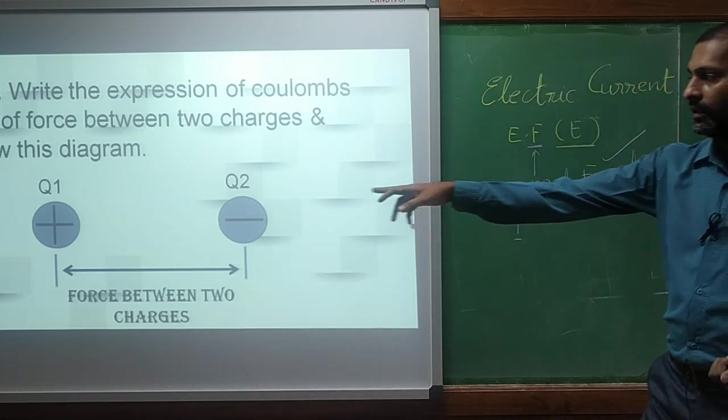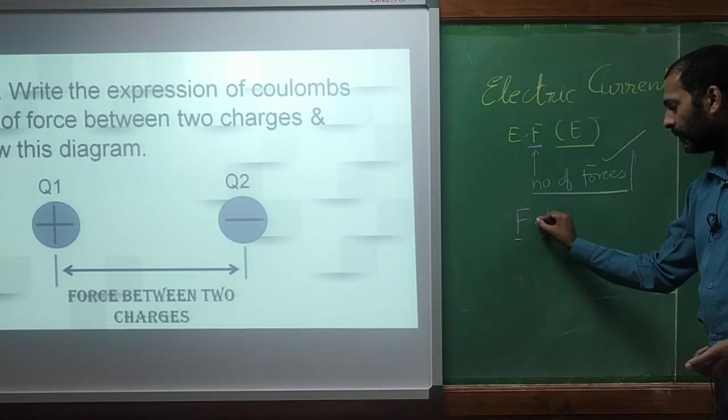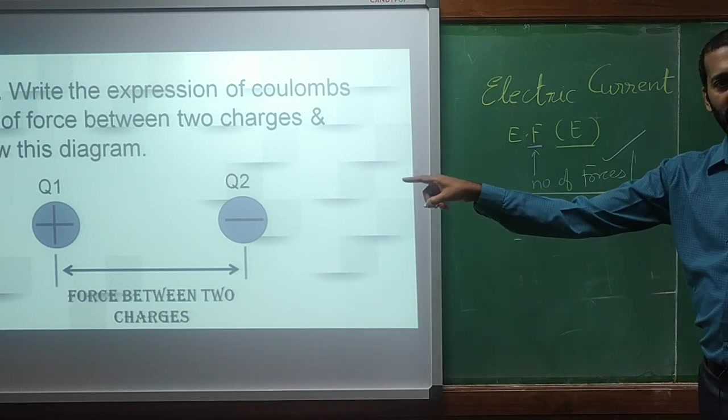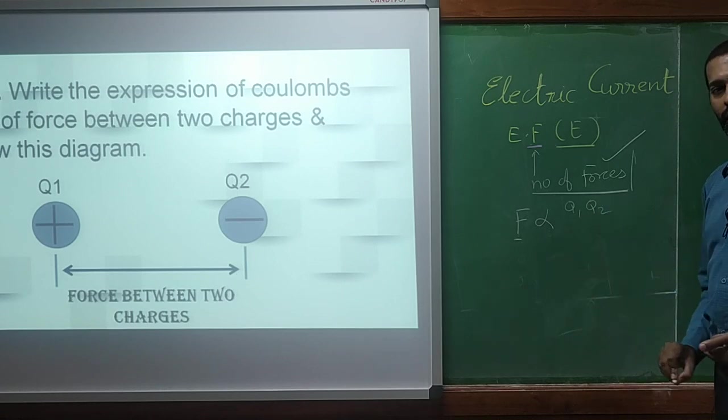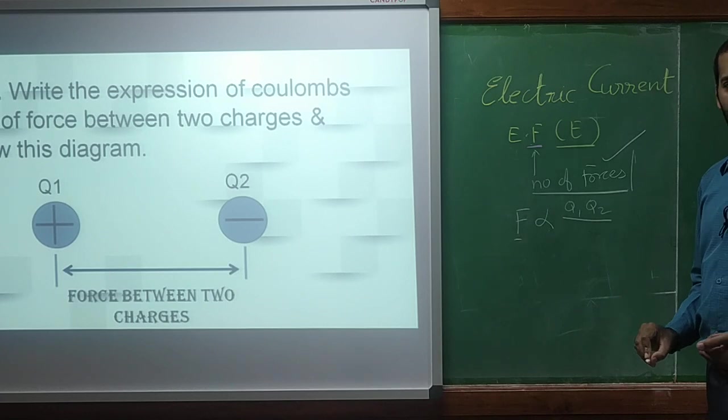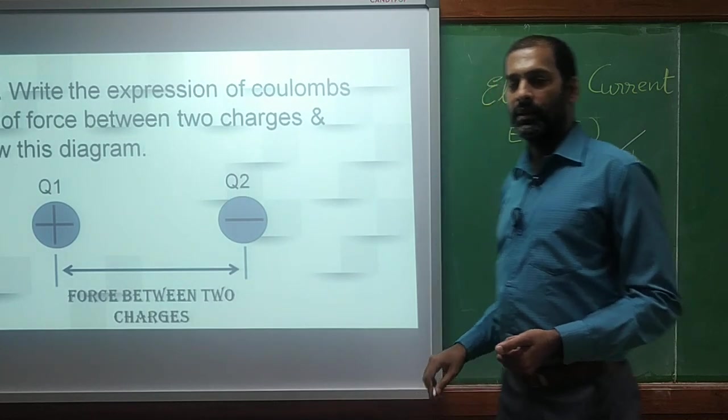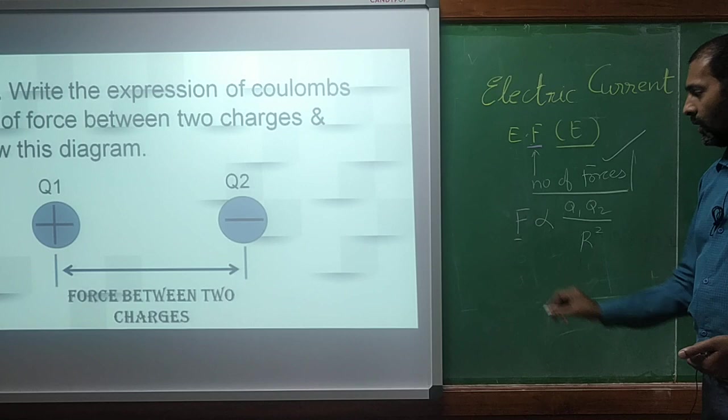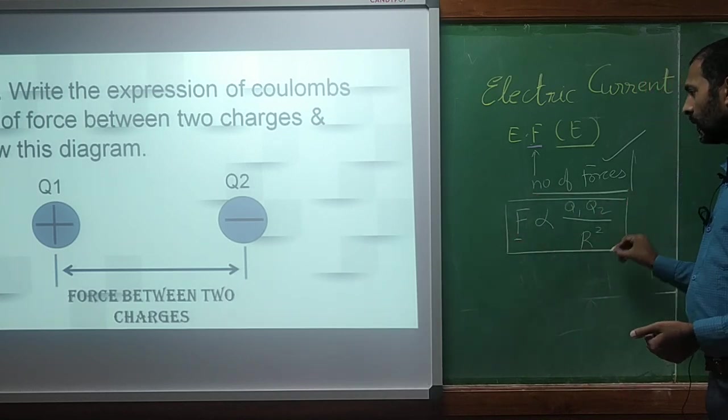So on similar line, the force between two charges, say Q1 and Q2, we can give by Coulomb's law, it states that this force is proportional to the product of charges. So we have two charges here, say Q1 and Q2. And it will be inversely proportional to the square distance between them. If we imagine that the distance between these two charges is, say, R. So it will become R square.